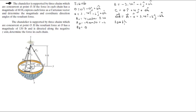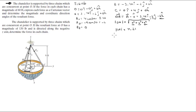Now we find vector OA, which is vector A minus vector O, giving 3.46i - 2j - 6k. The magnitude is found by taking the square root of the sum of squares of each component: √(3.46² + (-2)² + (-6)²) = 7.21. The unit vector OA equals the vector divided by its magnitude, giving 0.480i - 0.277j - 0.832k.